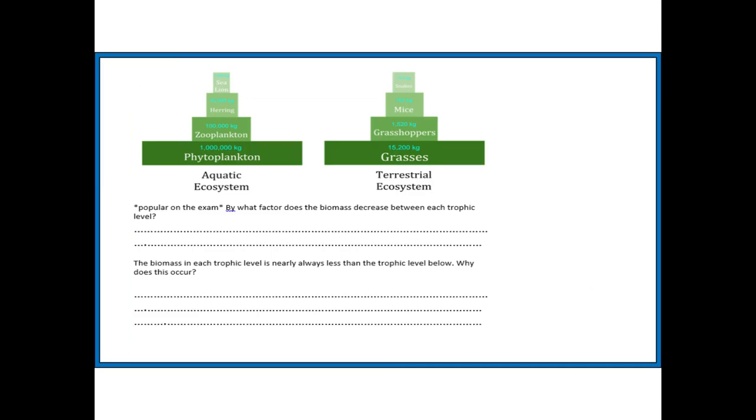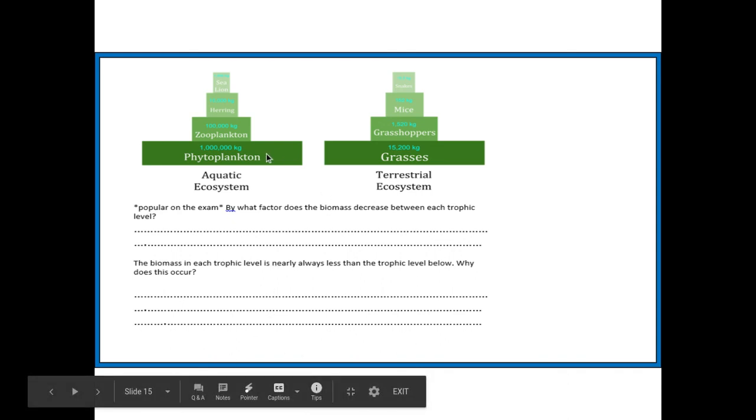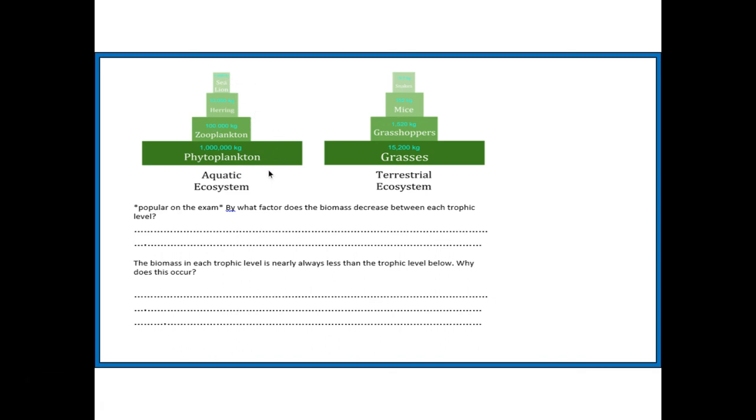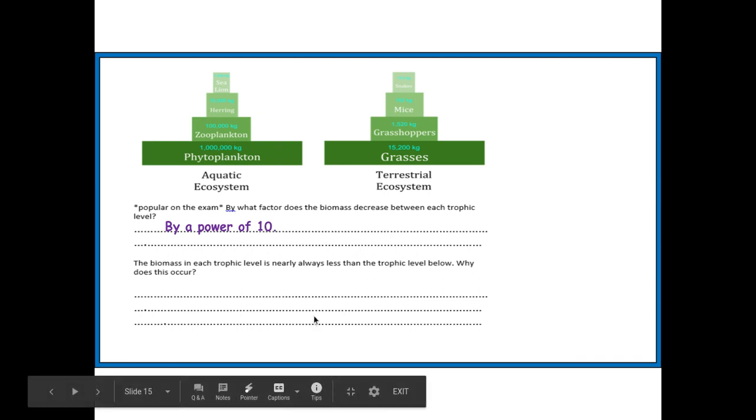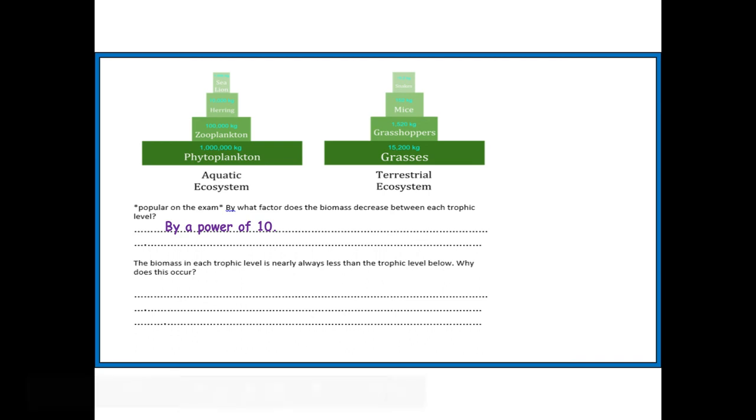A couple of questions here to think about, if you want to pause it and have a go. First of all, the first one is very popular in the exam: by what factor does the biomass decrease? You can see obviously it decreases as you go up the food chain. By what factor does the biomass decrease between each trophic level? It does decrease by a power of 10 or a factor of 10 each time. The biomass in each trophic level obviously is decreasing. Well, why? Why is it decreasing?